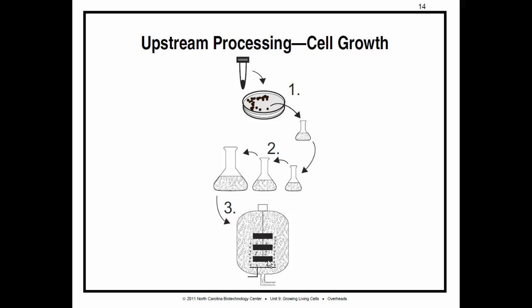Cell banks kept at production facilities are a major company asset because they serve as the source for all large-scale cultures that are grown to make the product. Basically, what you're looking at here is your starter for everything. These are very valuable products, these cells.